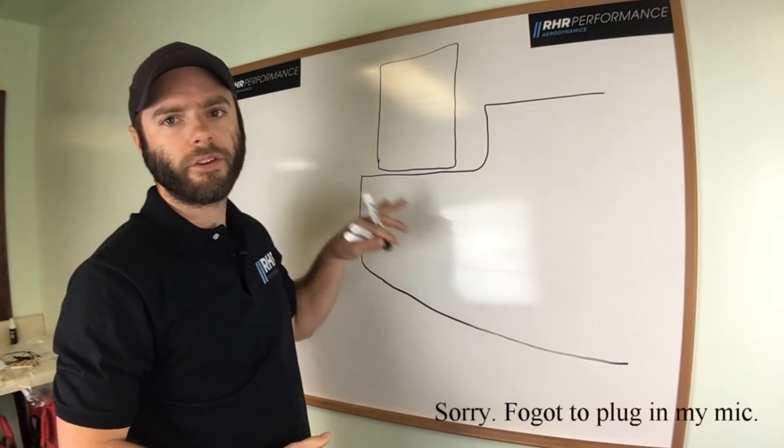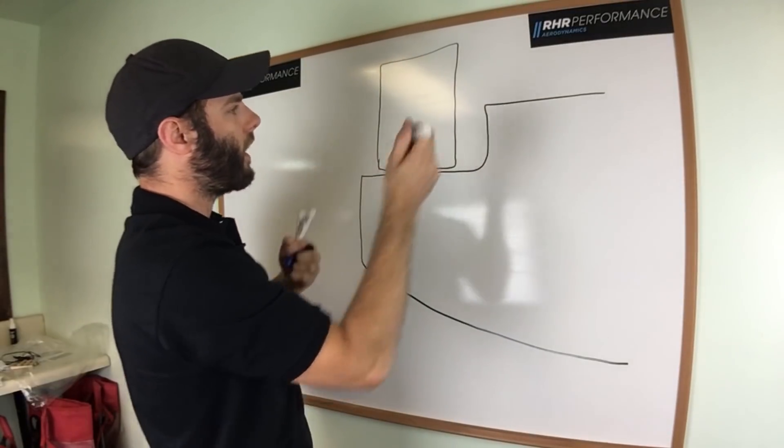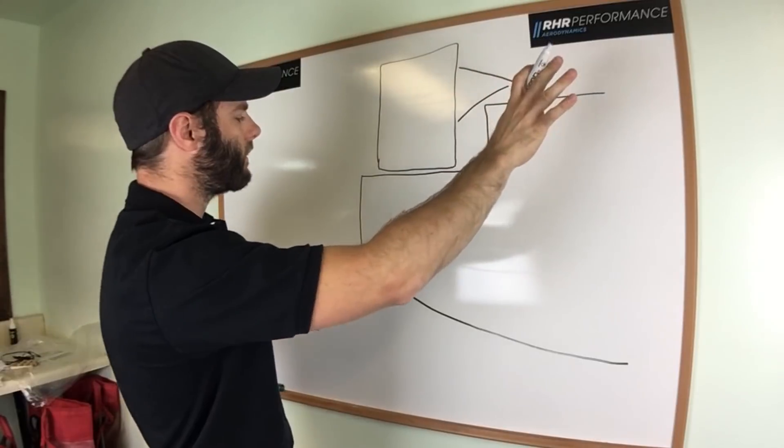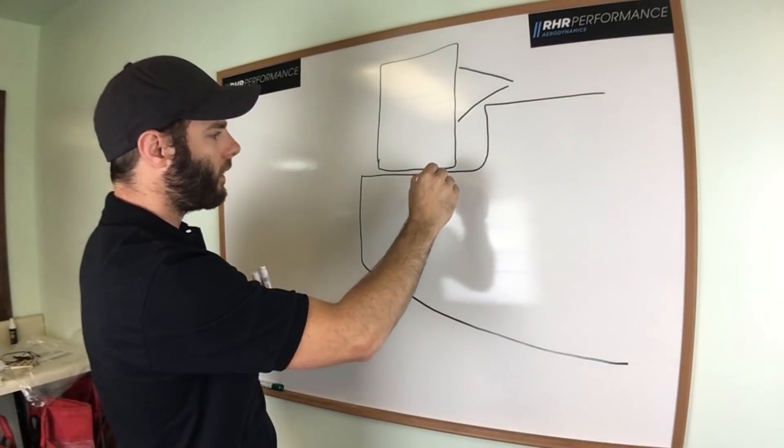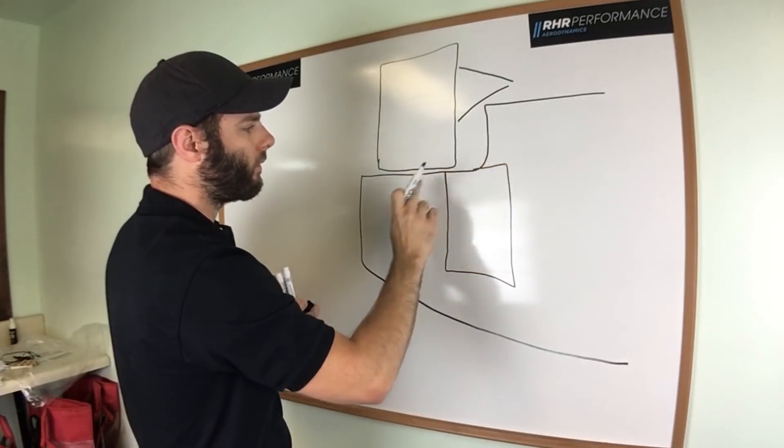So here we have just a general top down view of a splitter. Here's your tire. You'll have suspension components back here going to the chassis. Let's say you do a tunnel about here running straight in.